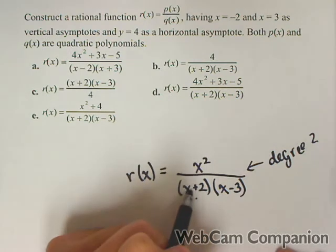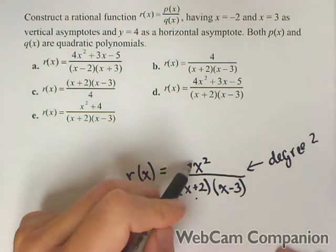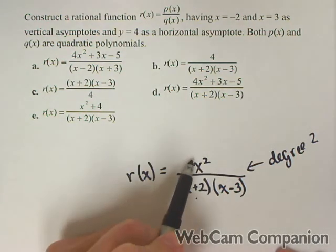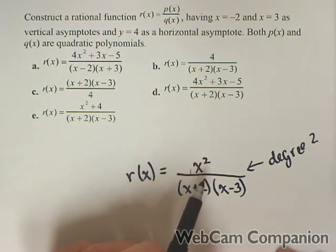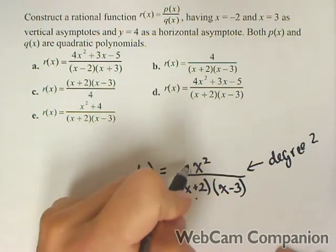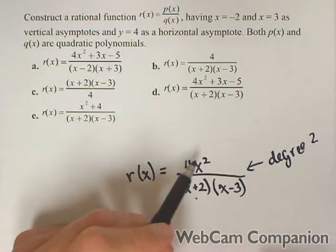Now because the degrees are the same, as of right now the horizontal asymptote is at y equals 1, because our ratio of coefficients is 1 over 1. So we actually need it to go to 4, so we need that to be 4x squared for our lead term.